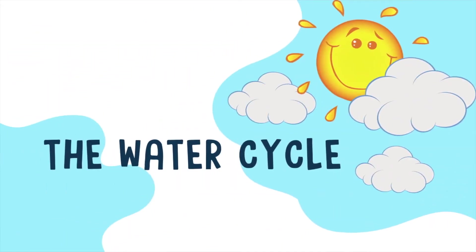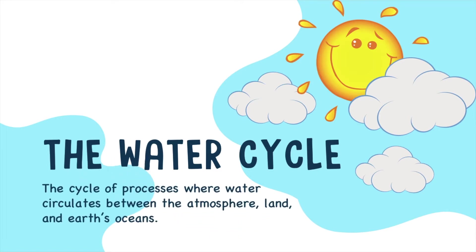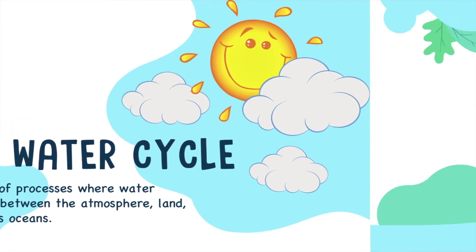The water cycle — the cycle of processes where water circulates between the atmosphere, land, and earth's oceans.